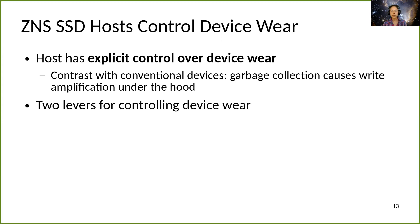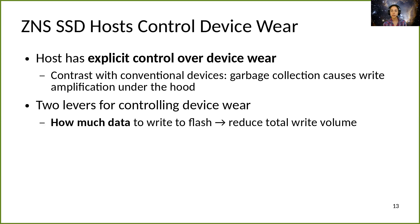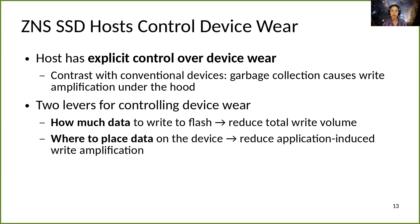The ZNS host has two main levers for controlling device wear. First, it can control device wear by choosing how much gets written to flash, since the device itself does not amplify writes. For example, it can restrict what data, if any, the application copies forward when erasing a zone. Second, the host can choose where to place data on the device in relation to other data. For example, it can write long-lived data to one zone and short-lived data to another, protecting the long-lived data from write amplification when the short-lived data is erased.